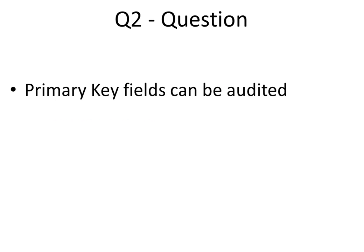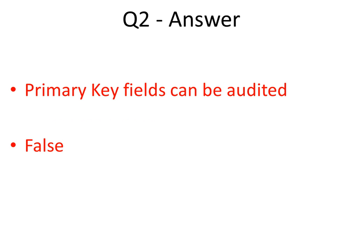Next question: primary key fields can be audited. False — you cannot audit primary key fields. These would be like account ID, contact ID — the primary key field on each entity. You cannot audit those.